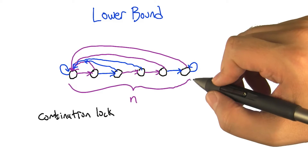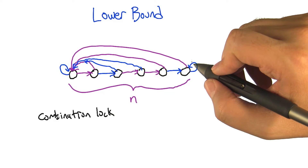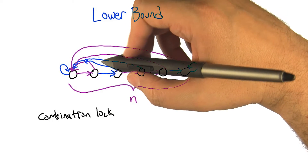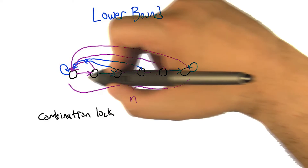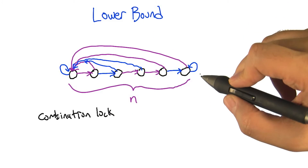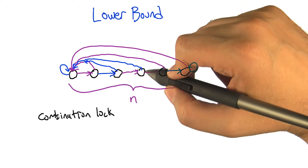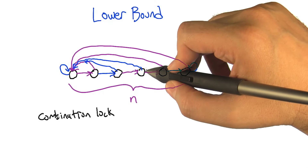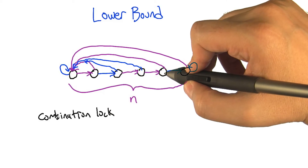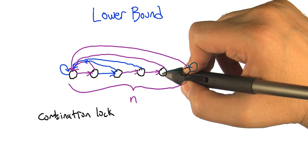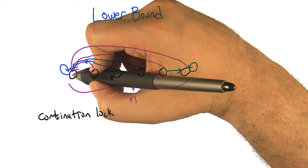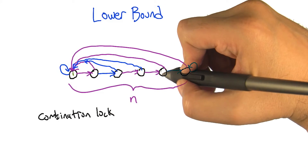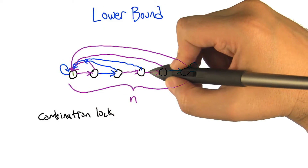Let me draw a little MDP. Here's an MDP that we can call a combination lock. The basic idea is that we've got some kind of n-state sequence and two actions, which I drew as purple and blue. Each state has a purple action and a blue action, and one of them goes back to this reset state — state number one — while the other one advances us up the chain one step.